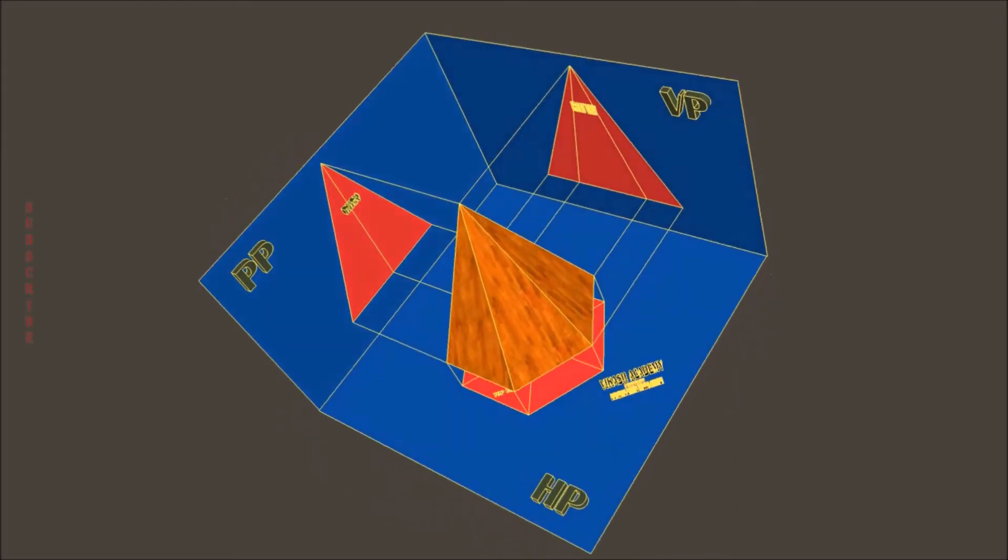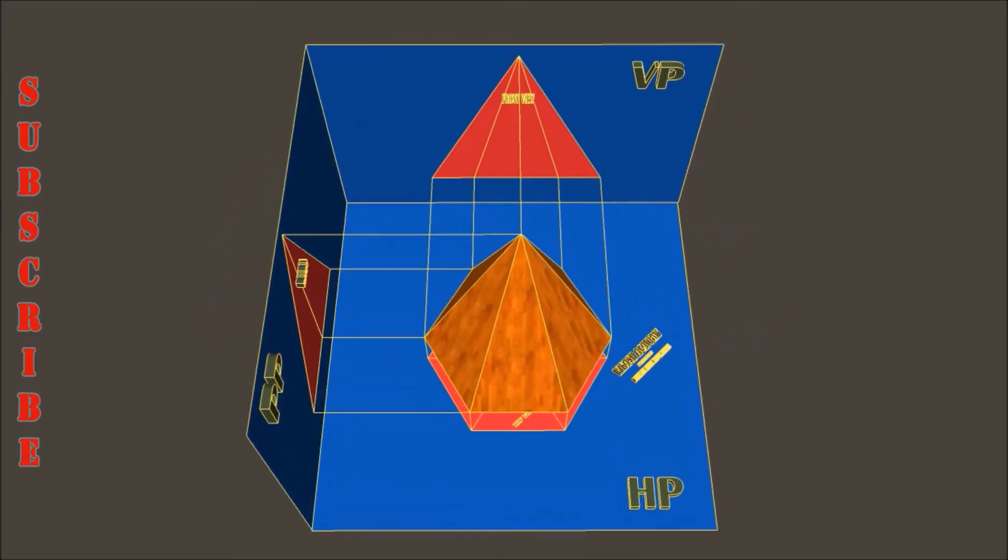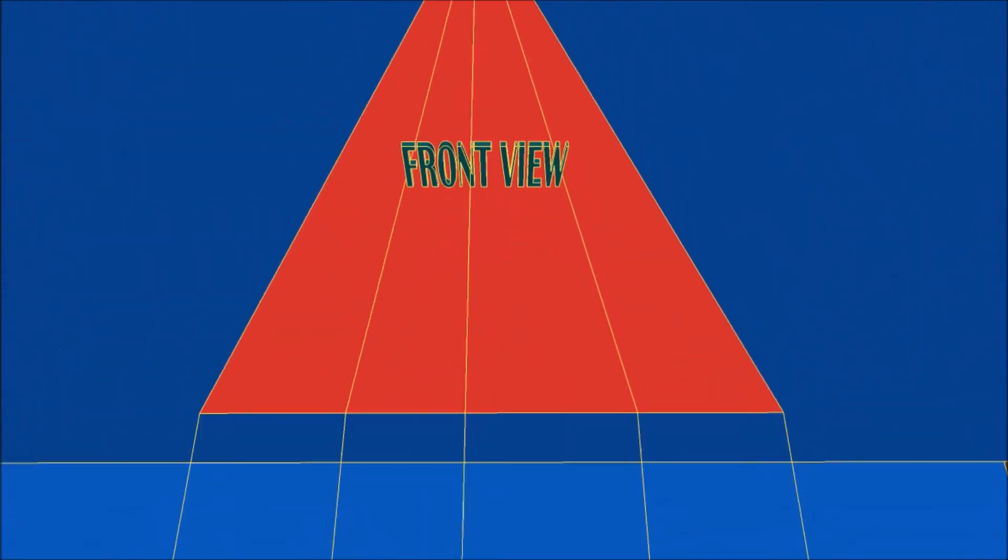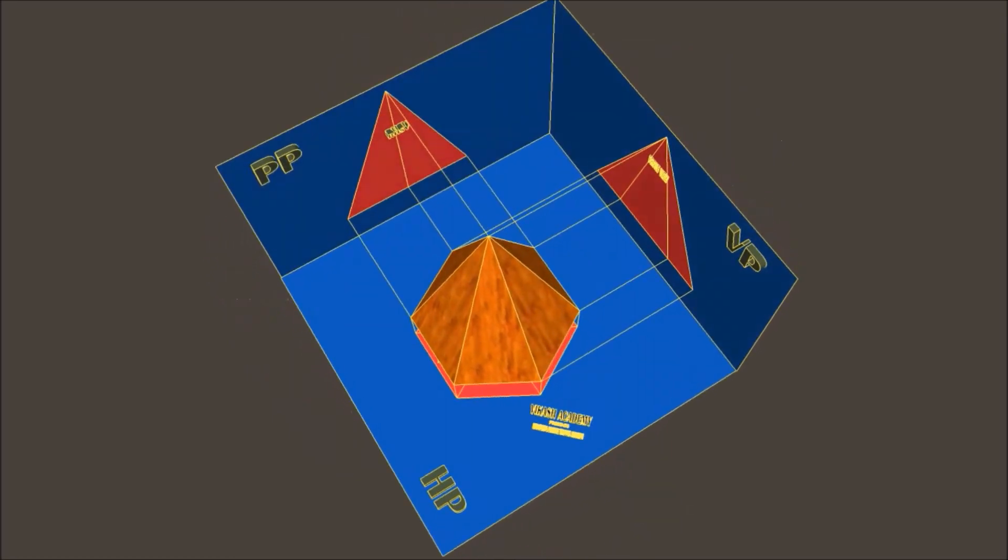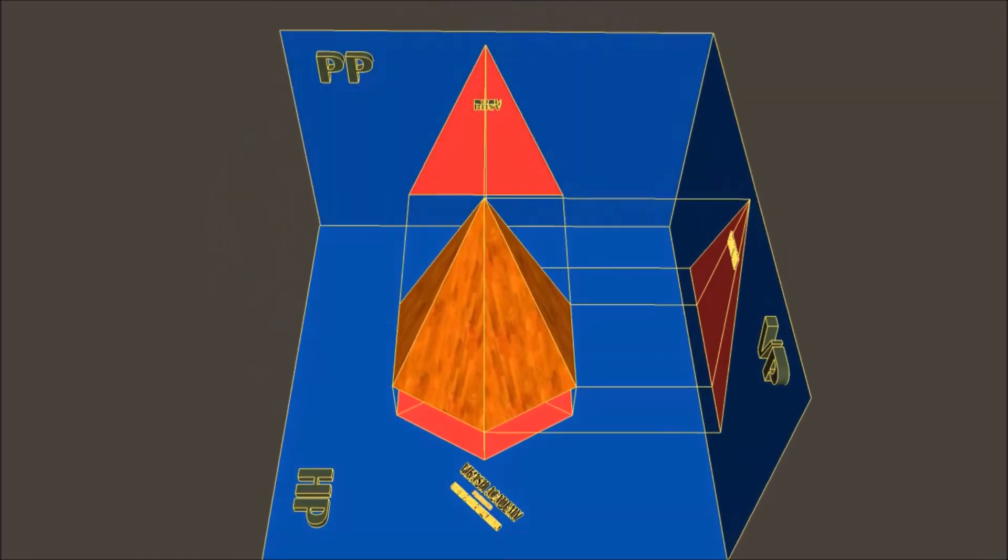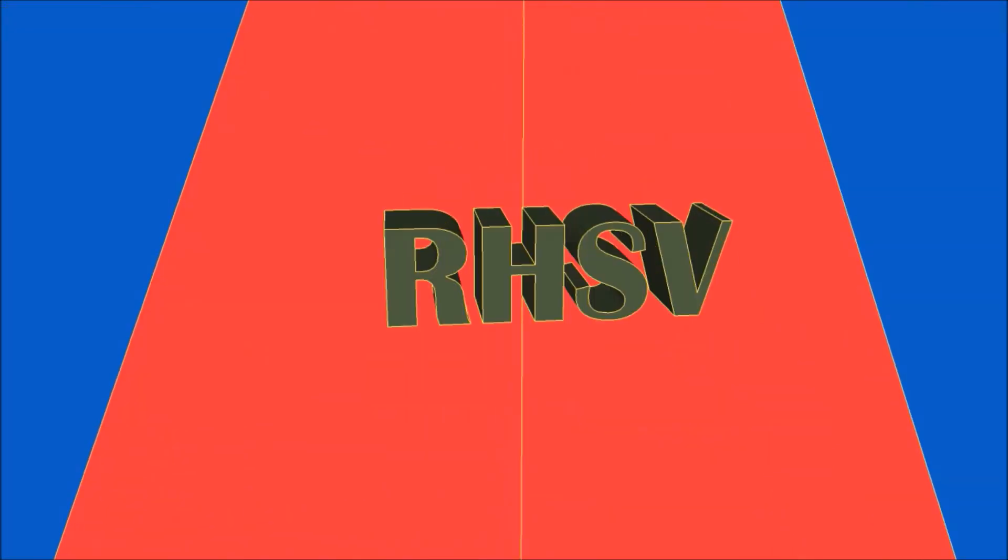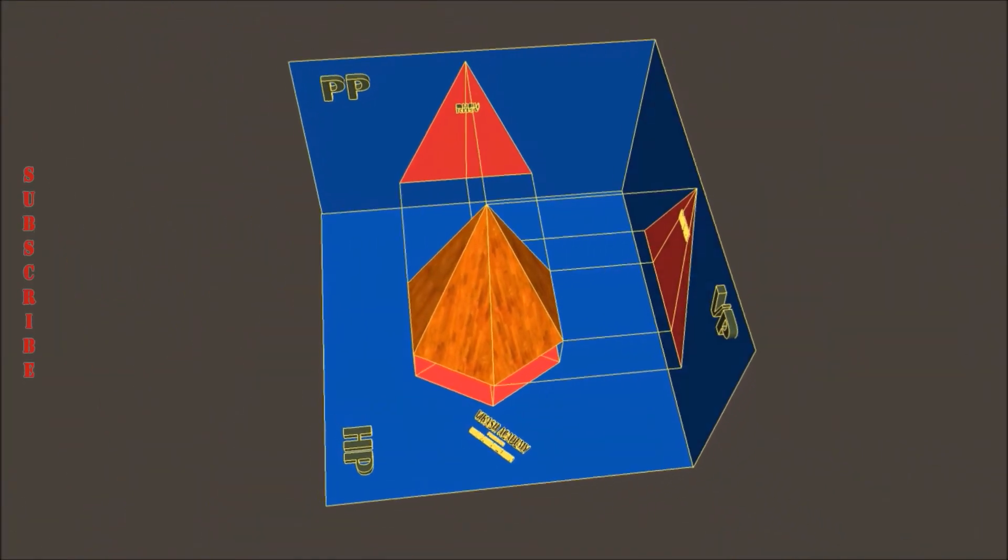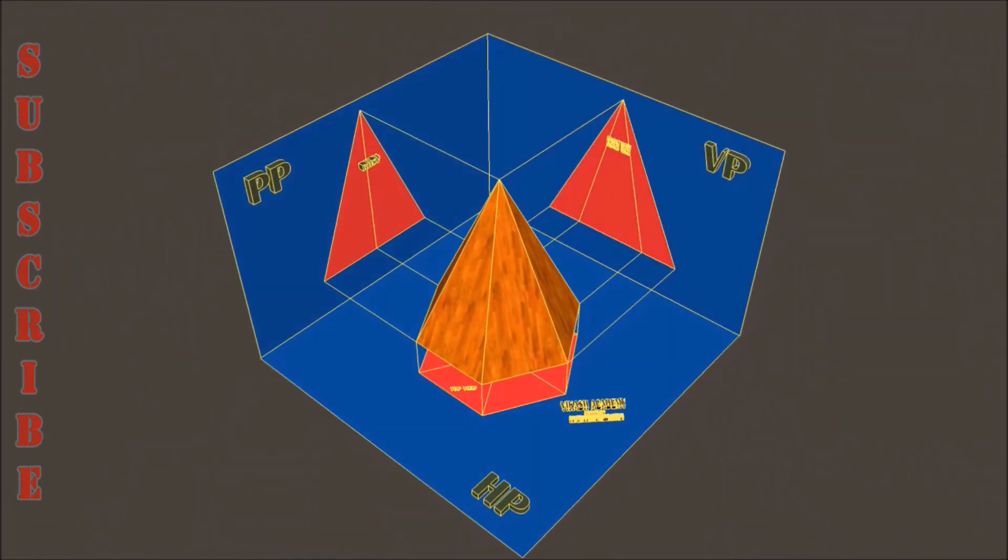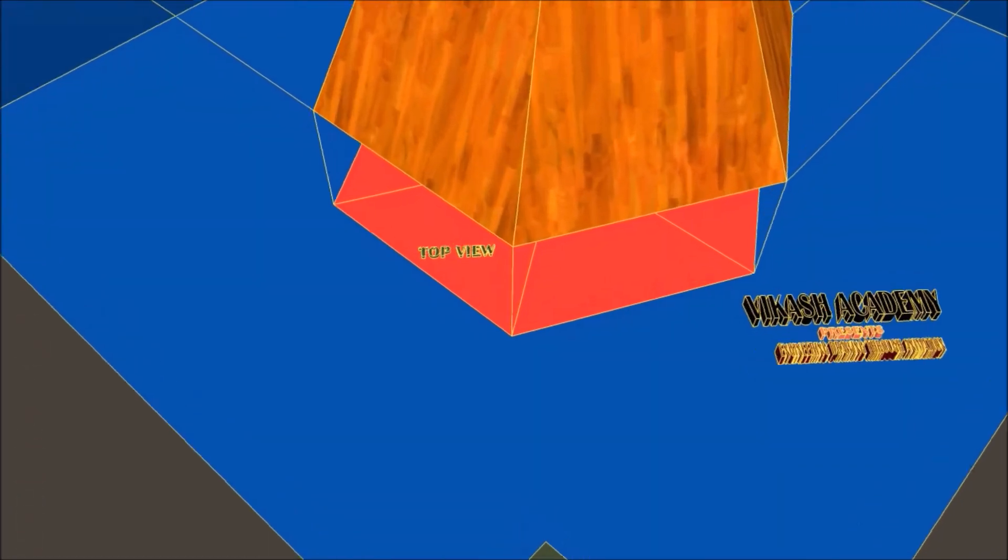So this is finally the orthographic projection of this hexagonal pyramid and I hope you are able to understand it. It will become more clear from these animations. If you have any query then please write in the comment box and stay tuned with us. We have a lot of tutorials and animations on orthographic projections of solids as well as some basic planes.